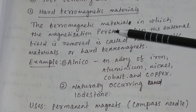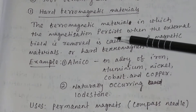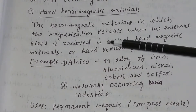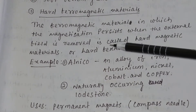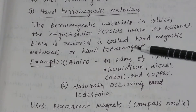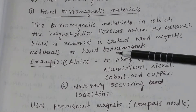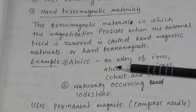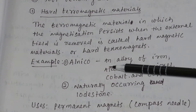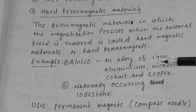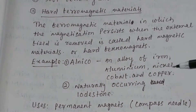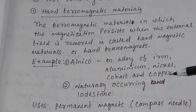The ferromagnetic material in which the magnetization persists when the external field is removed is called hard ferromagnetic materials, or hard ferromagnets. Example: Alnico, an alloy of iron, aluminium, nickel, cobalt, and copper.